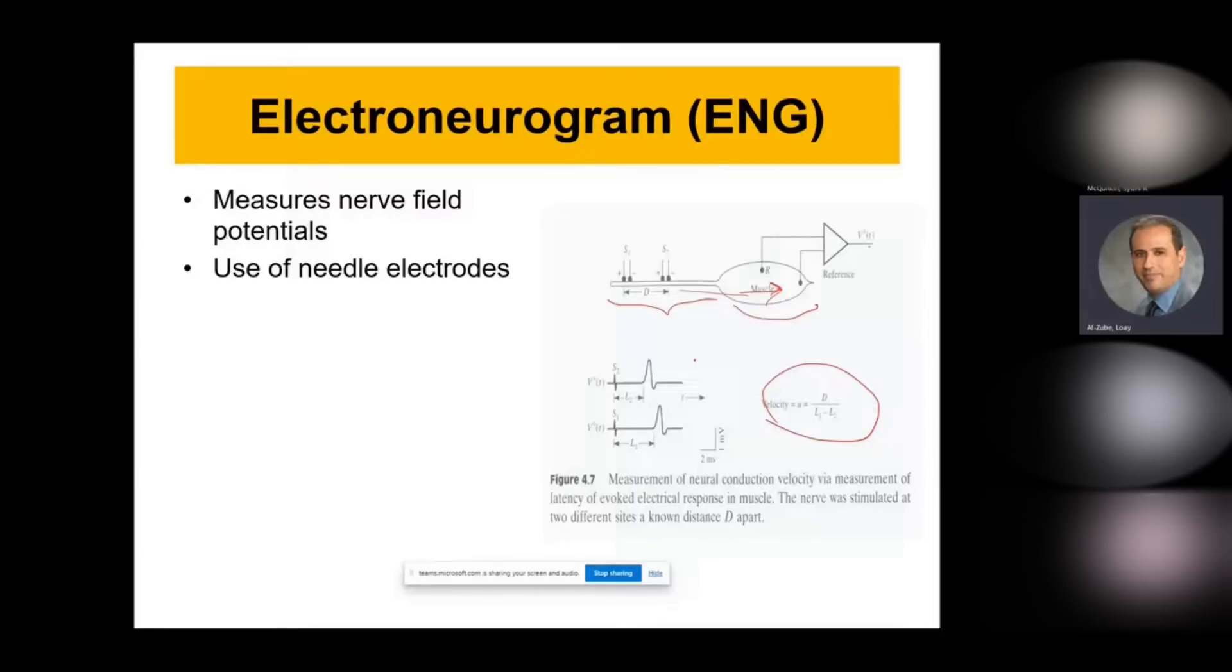Each electrode will evoke the nerve and then the action potential will propagate, reaches the operational amplifier. This latency is the time from the stimulation of the nerve until you have the action potential reaching the op-amp here at this location. This is called the ENG.